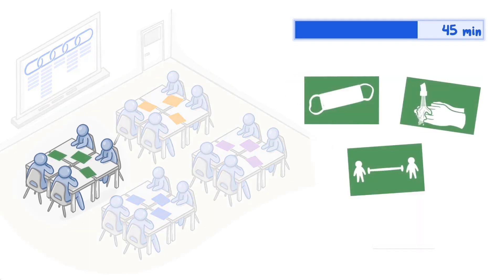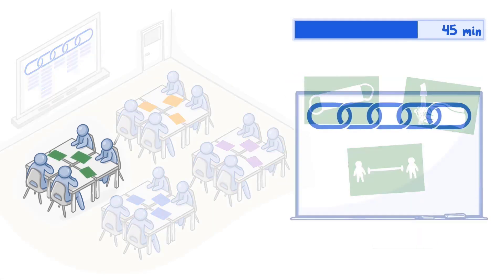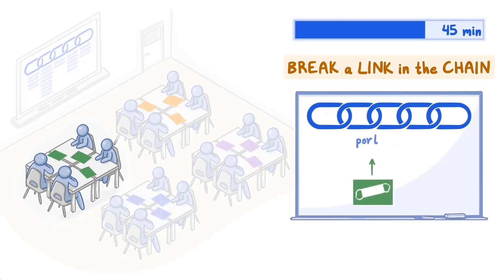For example, to complete the cards, students select wearing a mask as a strategy that will break a link in the chain after the portal of exit. A sample explanation is that the portal of exit has been blocked so the infectious agent cannot get out.